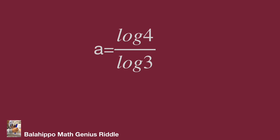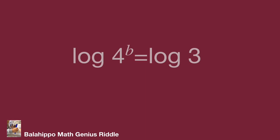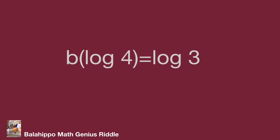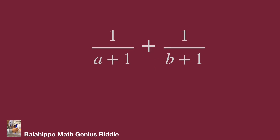Next, manage the second equation 4 power b equals 3. Taking log of both sides gives log of 4 power b equals log 3, so b times log 4 equals log 3, therefore b equals log 3 over log 4. So we now have both a and b values for our expression 1 over (a plus 1) plus 1 over (b plus 1).